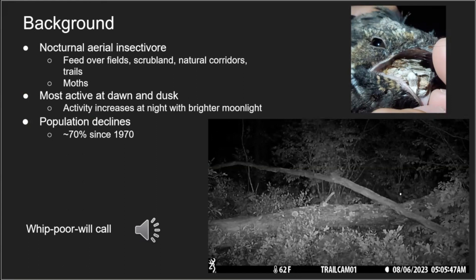To give you a little background on the Eastern Whippoorwill: they are an aerial insectivore and they are nocturnal. They primarily feed over early successional areas — grasslands, shrublands, under open canopy, through natural corridors or trails. They primarily feed on small to medium-sized moths. We happened to catch this individual with a mouth full of moths — the first time I've ever caught an individual with food in its mouth.